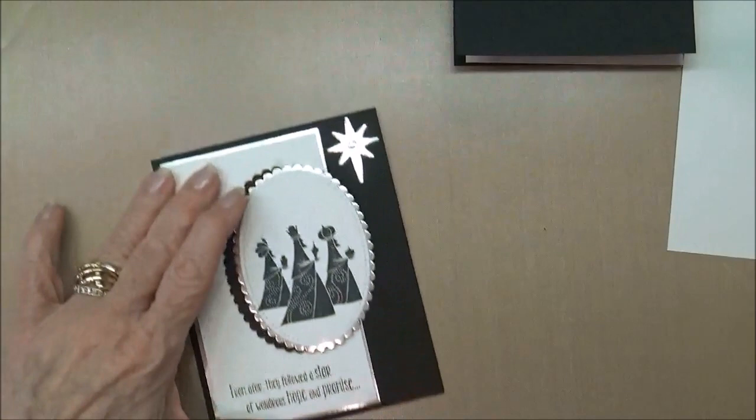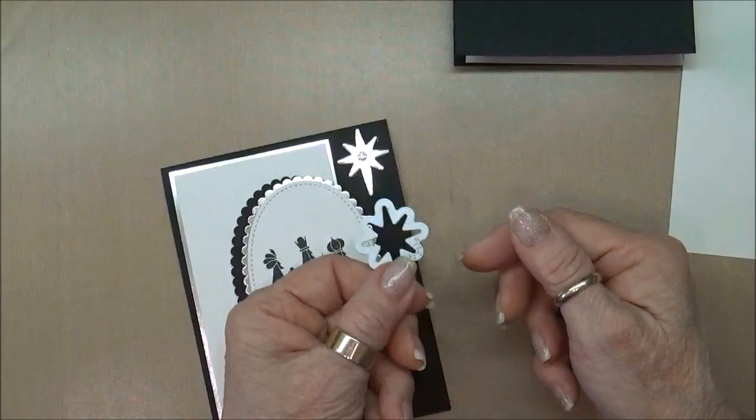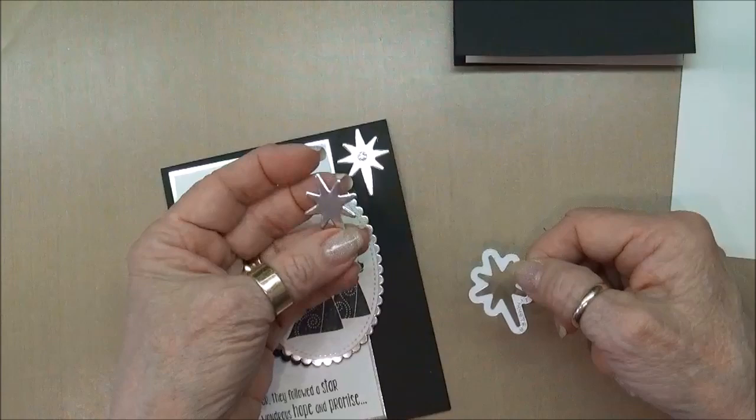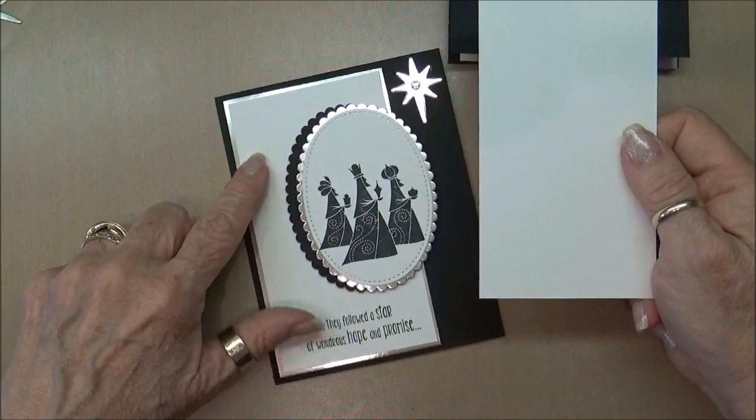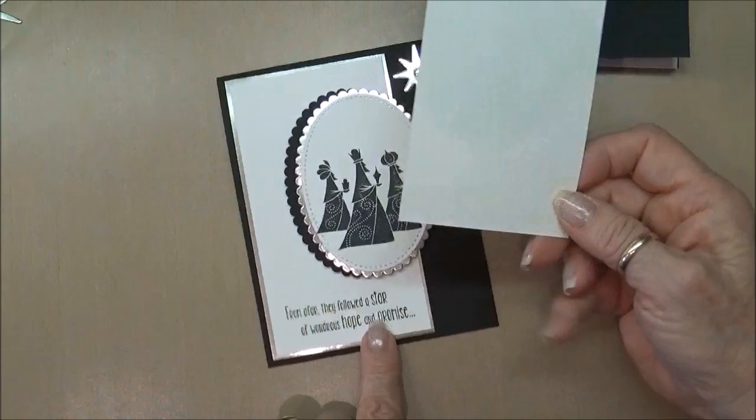Then I'm also going to use the star from the Bethlehem Edgelet set and I'm going to cut that out and you can see that I previously cut that out of a piece of the champagne cardstock. And then I have a piece of our shimmery white and that will be layering on top of the champagne and this is two and seven eighths by five and one eighth and on this one we're going to be stamping the sentiment.